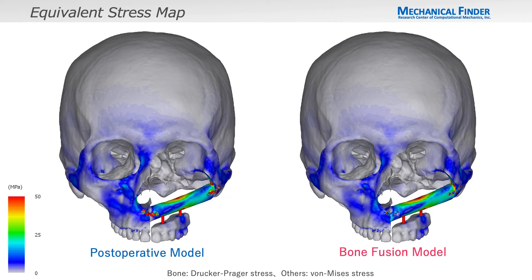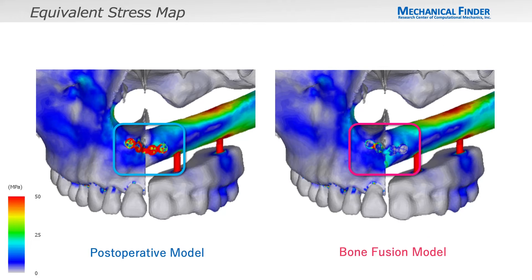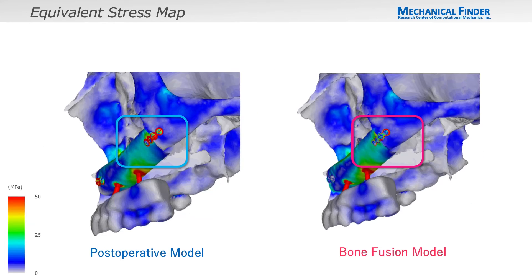The distribution of stresses showed that they were applied from the overdenture to the fibula via the implant and distributed medially and laterally. The fibula showed a strong minimum principal stress in the cortex at the implantation site and an equivalent maximum principal stress in the contralateral cortex. The plate in the postoperative model is subject to some stresses at the implant, but the stress on the plate in the bone fusion model is reduced and new stresses are generated at the fibula boundary. Similar findings are observed at the lateral boundary.